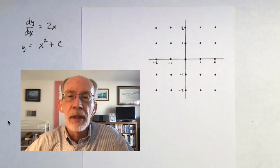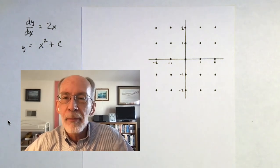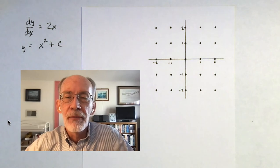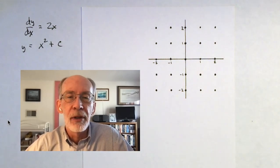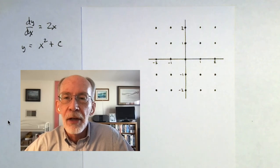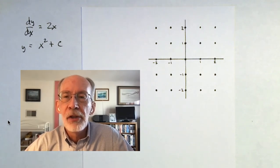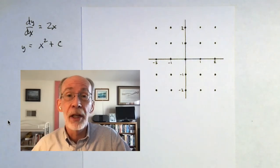We're back here and we're going to ask ourselves the rather rhetorical question: what happens if you don't know how to solve the differential equation? This was an easy one, but we'll continue using it for example purposes. It turns out there is a method called that of the slope field that allows you to make a grainy, low-resolution image of the integral curves without knowing the analytical form of the integral curves — without knowing the equation for them.